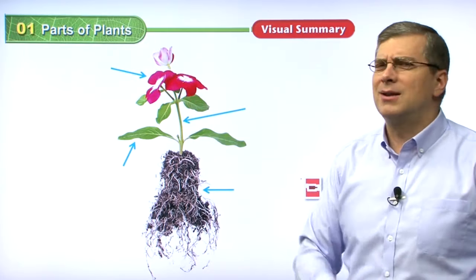Now we have reading comprehension questions. Question number one: the roots of a plant are found in the — A, air; B, soil; C, leaves. This might be a little tricky because they're using a different word. Before we learned that roots are in the ground. What is another word that means the same as ground? That would be soil. Soil is the same as ground. So the roots of a plant are found in the soil.